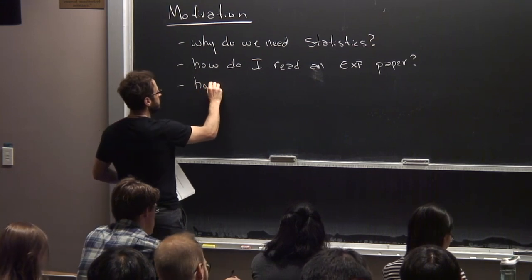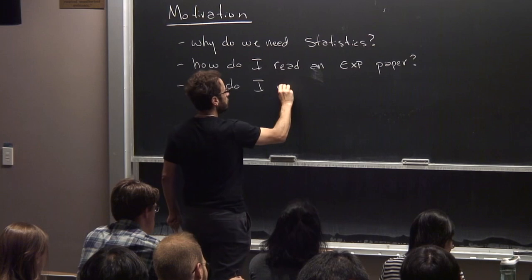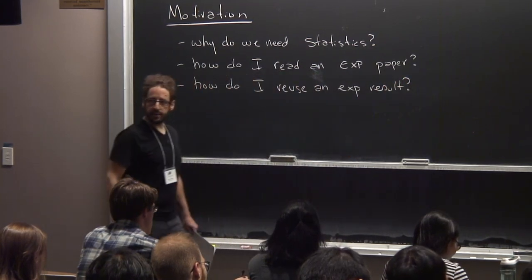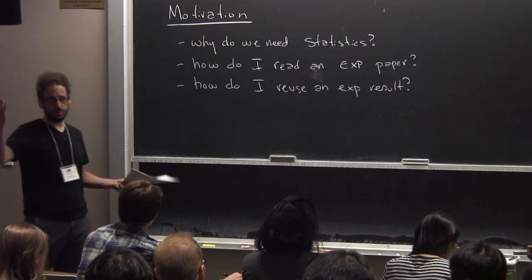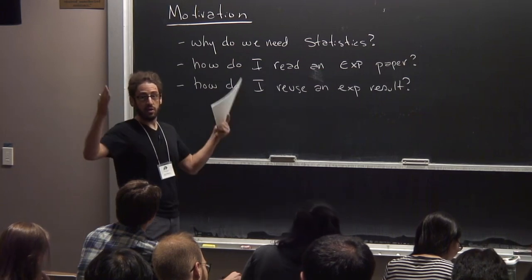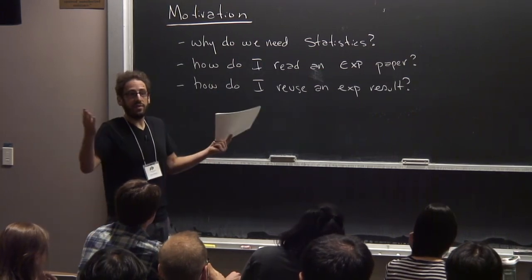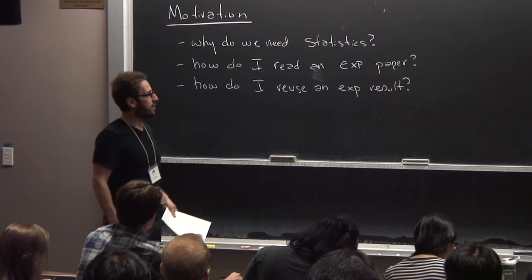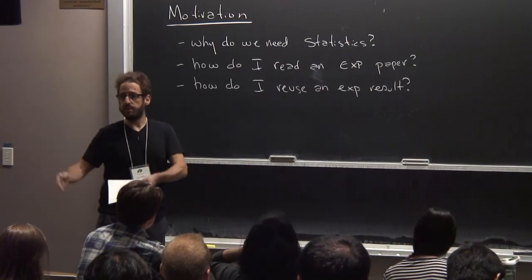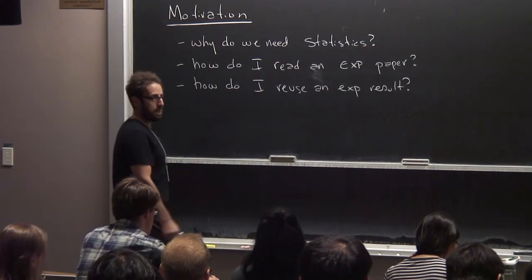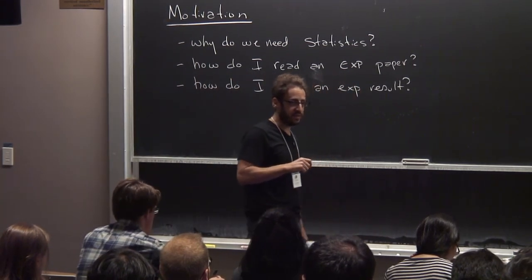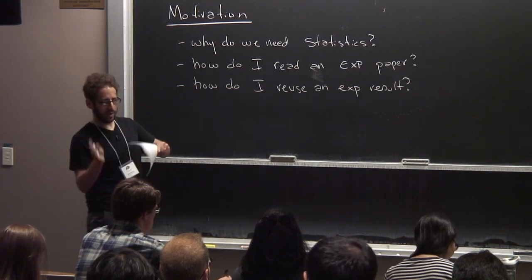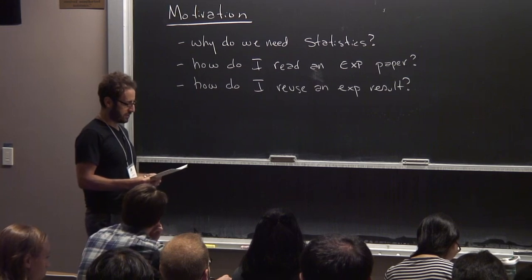A corollary to that is: how do I reuse an experimental result? ATLAS has a limit on squiglions decaying to three taus and two photons, and you happen to have another theory — squiglinos. You want to know how their result applies, because you couldn't convince them to test your theory. How can you use their result to set limits on your theory? Is it different from reprocessing the data? It depends on exactly how they present the results. We'll go through several examples: if they do this, you do that — and sometimes it means the result is unusable.